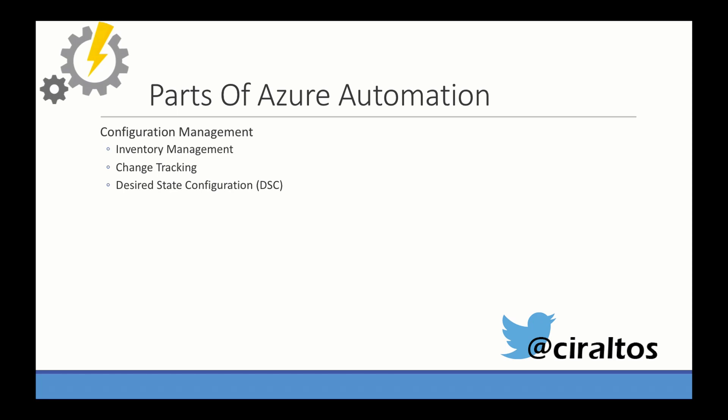The parts of Azure Automation include configuration management. Under configuration management, we have inventory management, where you can view the VMs in your environment as well as the software. Change tracking, where you can monitor what's changed on your systems. And desired state configuration, or DSC. DSC allows you to create and apply configuration templates against virtual machines in or outside of Azure, as well as physical machines. DSC has been around and part of PowerShell for some time. Azure DSC allows you to utilize a cloud-based push server.